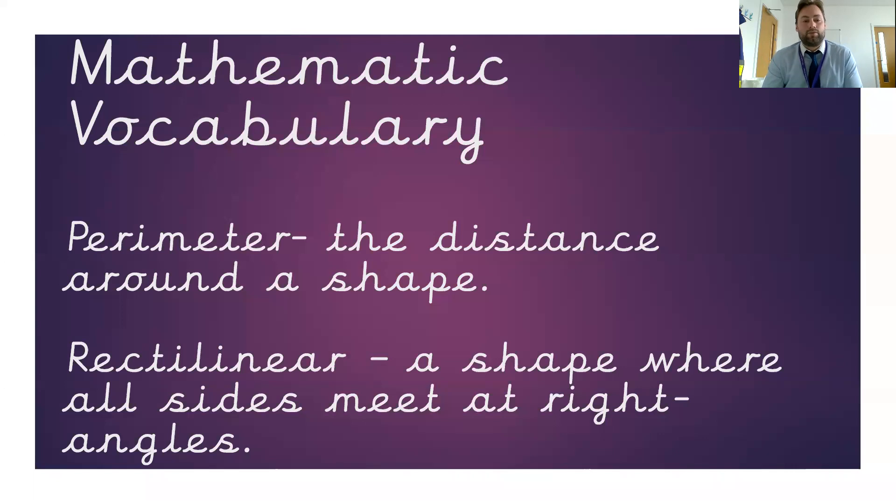And rectilinear is another word we're going to be hearing. It's a shape where all sides meet at right angles. So it could be a square, it could be a rectangle, or it could be like an L shape. That's what rectilinear means. So check those words out and get used to using them.